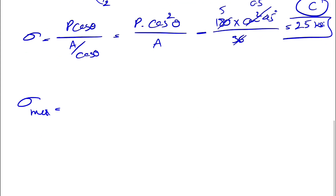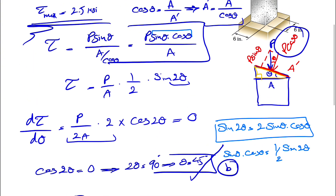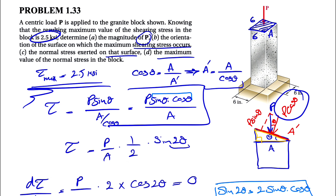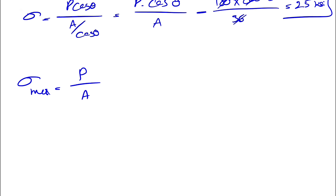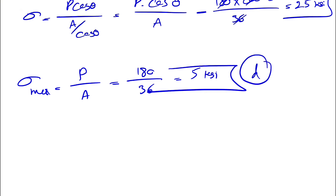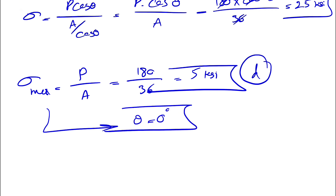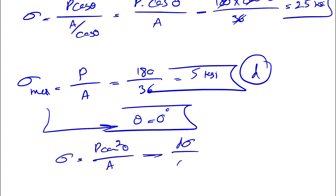For part D, we need the maximum normal stress in the block. The maximum normal stress occurs when P is perpendicular to A, giving σ_max = P / A = 180 / 36 = 5 KSI. This corresponds to θ = 0°, which we can verify by taking the derivative of P cos²θ / A with respect to theta and setting it to zero.